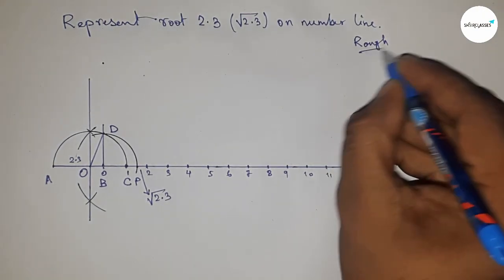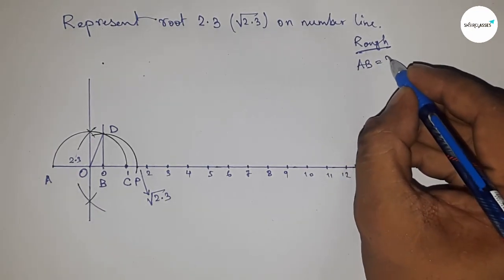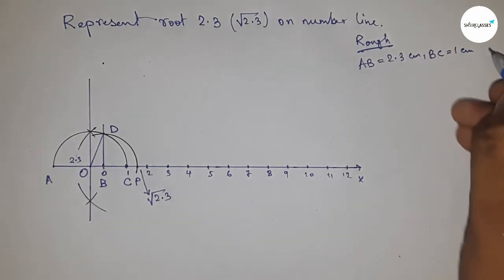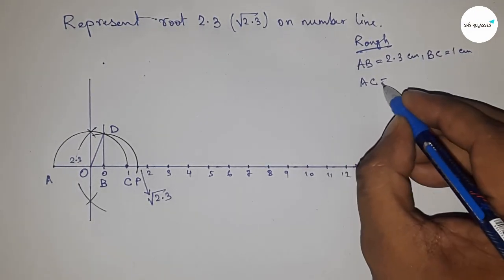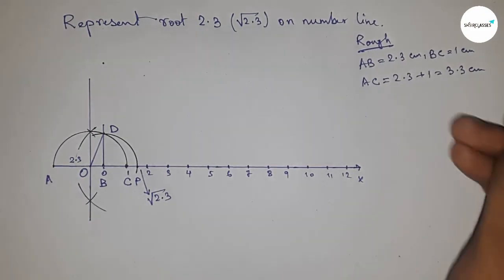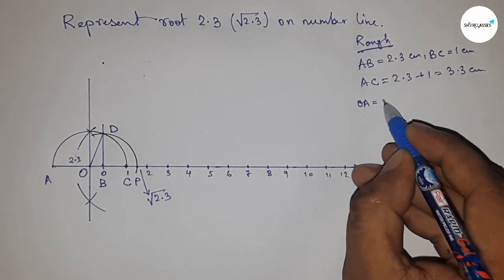Now let's discuss the calculation. Given: AB equals 2.3 centimeters and BC equals 1 centimeter, so we can write AC equals 2.3 plus 1, which equals 3.3 centimeters.